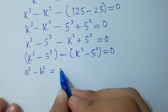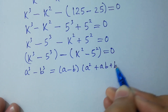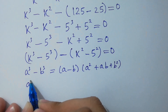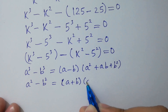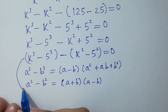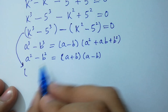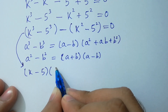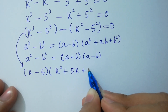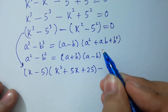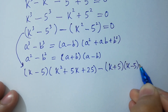Since a cubed minus b cubed equals (a minus b)(a squared plus ab plus b squared), and a squared minus b squared equals (a plus b)(a minus b), we apply these identities. So k cubed minus 5 cubed gives (k minus 5)(k squared plus 5k plus 25), and k squared minus 5 squared gives (k plus 5)(k minus 5), equal to 0.